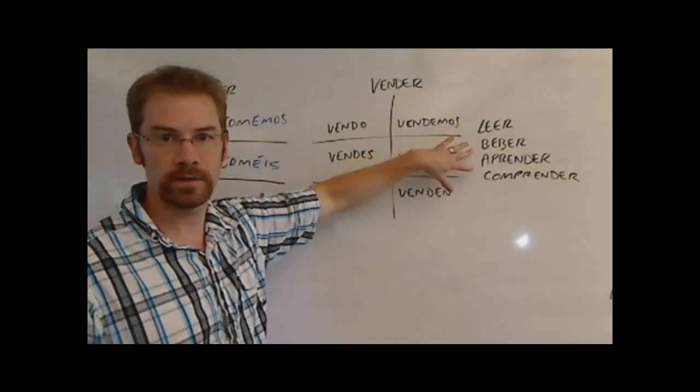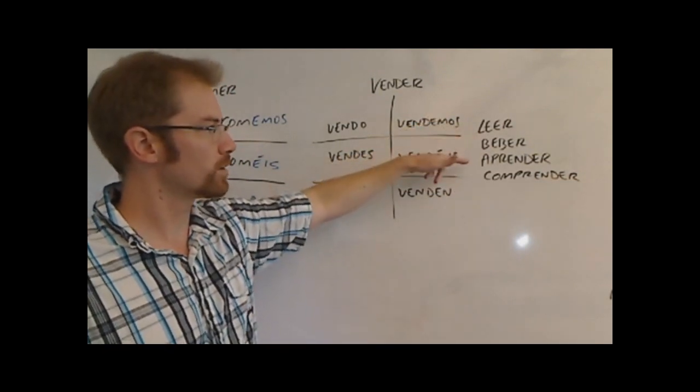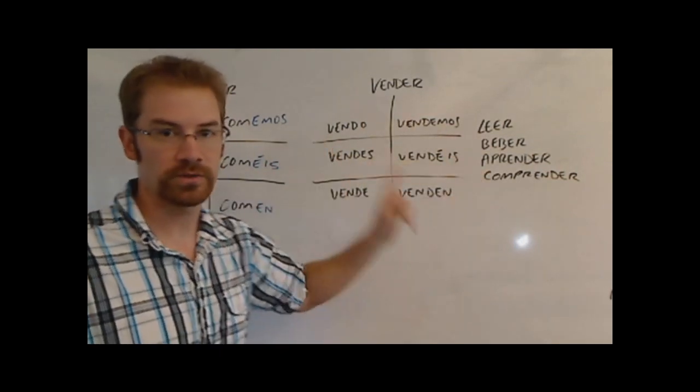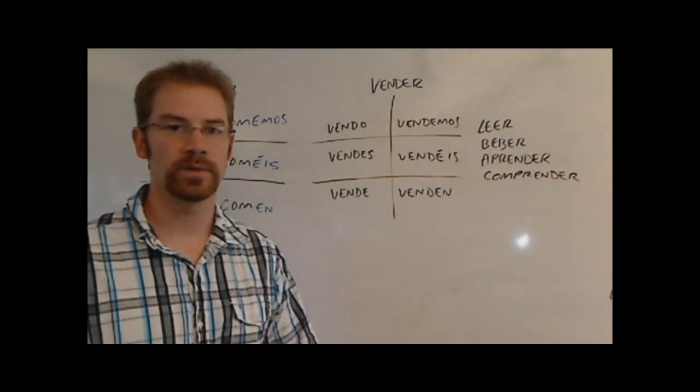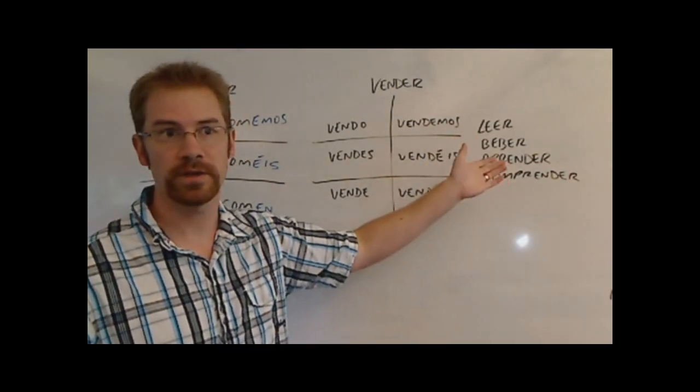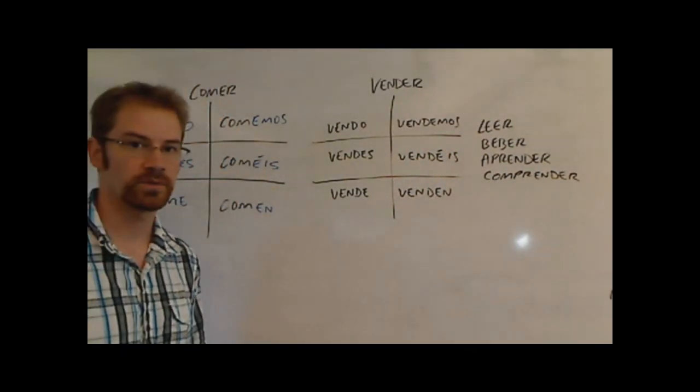I have four more ER verbs that are regular in the present tense: leer, beber, aprender, comprender. All these verbs follow this exact same pattern. So if you can do one regular verb in the present tense ER verb, you can do all of them, which is nice. So all of these verbs you can take off the ER and then add these endings, the blue endings to them, and you can conjugate them correctly.